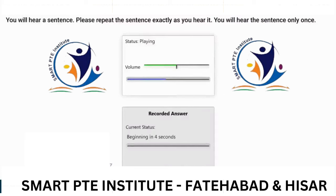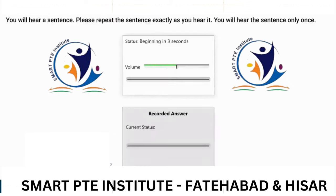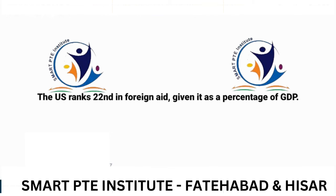The US ranks 22nd in foreign aid given as a percentage of GDP.